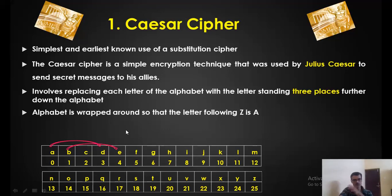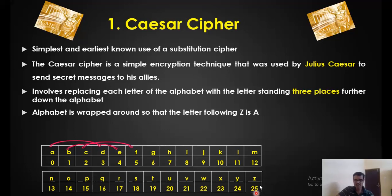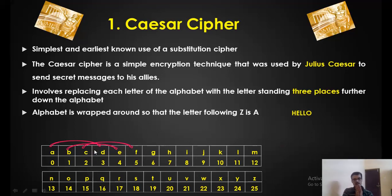So every B is substituted by E. C is replaced by F. D is replaced by G — just add 3. And finally when we reach X: X is 23, plus 3 is 26. We don't have any alphabet after 25, so we wrap around to A. X is replaced by A, Y is replaced by B, and Z is replaced by C. This is equivalent to doing mod 26.